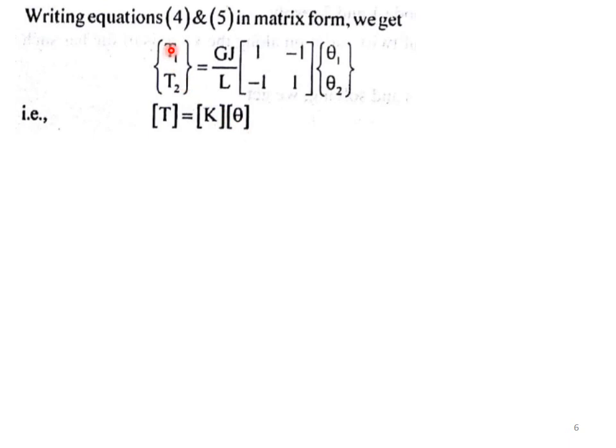So T1 is equal to GJ by L into 1 minus 1, minus 1, 1 into theta 1, theta 2.